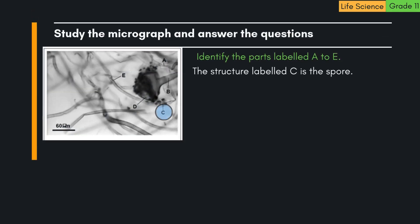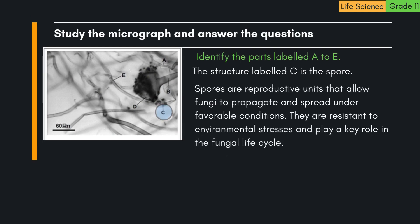3. The structure labelled C is the spore. Spores are reproductive units that allow fungi to propagate and spread under favourable conditions. They are resistant to environmental stresses and play a key role in the fungal life cycle.